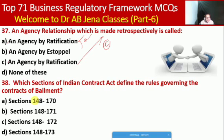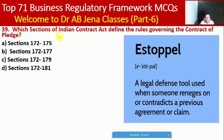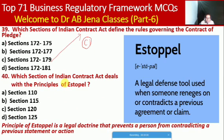Next MCQ: which sections of the Indian Contract Act define the rules governing contracts of bailment? Whether Sections 148 to 170, 148 to 171, 148 to 172, or 148 to 173. Here B is the right option — Sections 148 to 171. Next MCQ: which sections of the Indian Contract Act define the rules governing the contract of pledge? Whether Sections 172–175, 172–177, 172–179, or 171. Here C is the right option — Sections 172 to 179.